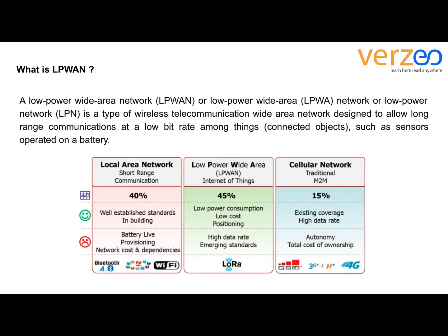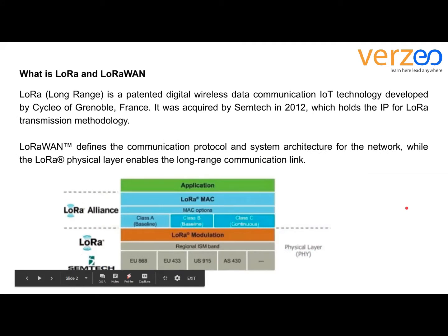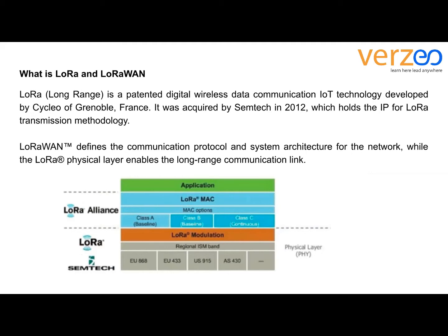In low power wide area network, you have high data rates and emerging standards. In cellular networks, you have autonomy and total cost of ownership. LP-WAN offers multi-year battery lifetime and is designated for sensors and applications that need to send small amounts of data over long distances a few times per hour.